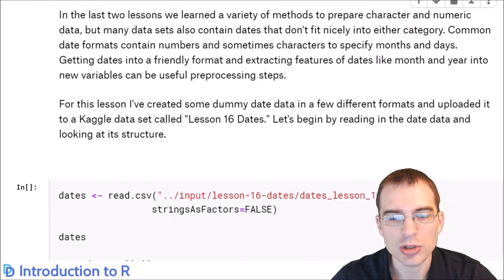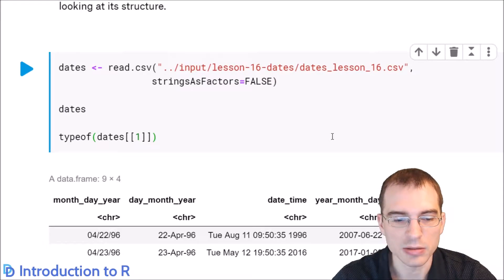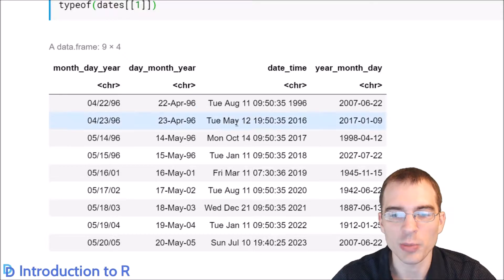I'll start by reading in some date data that I've prepared for this lesson. The data here has four different columns which include dates in different formats. The names of the columns tell you the general format of the dates for that column. This first column is called month, day, year, because that's the format of how the date is.